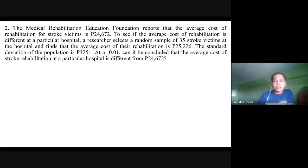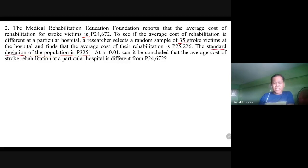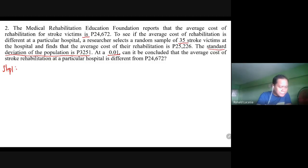Let's have example two. The Medical Rehabilitation Education Foundation reports that the average cost of rehabilitation for a stroke victim is 24,672. To see if the average cost of rehabilitation is different at a particular hospital, a researcher selects a random sample of 25 stroke victims and finds that the average cost is 25,226. The population standard deviation is 3,251. At α = 0.01, can it be concluded that the average cost of stroke rehabilitation at that hospital is different from 24,672? Step one: formulate the null and alternative hypothesis.